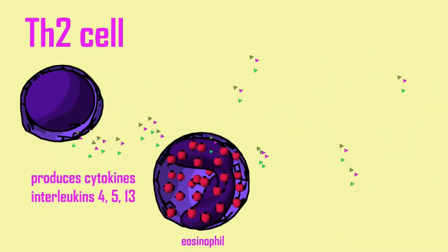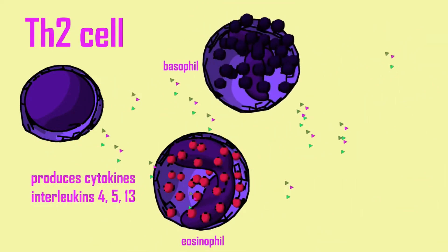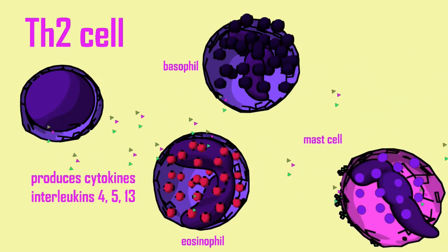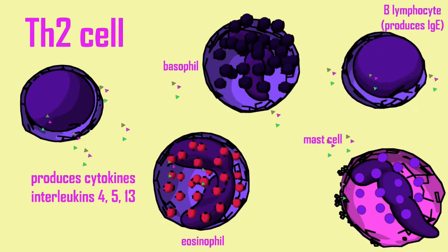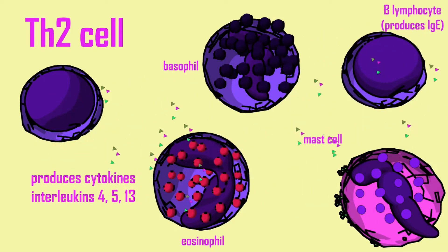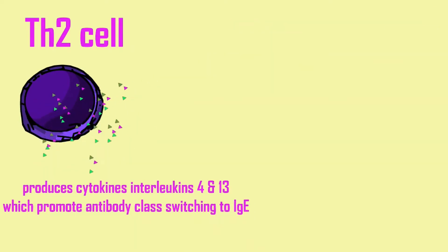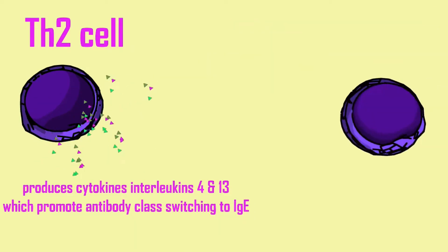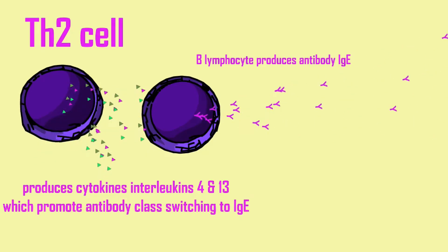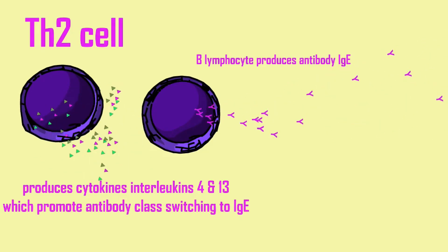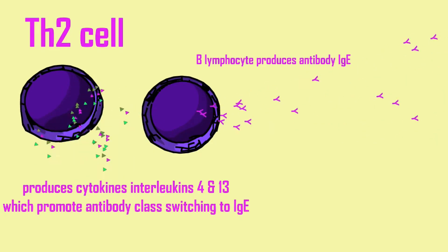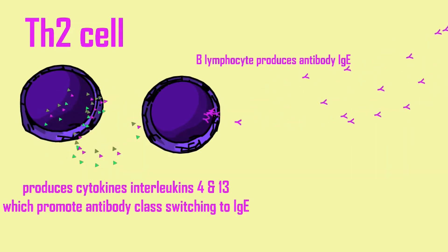Estrogen signaling can affect the cell number of lymphocytes, their activity, and the balance of Th1 and Th2 cells, which helps to regulate our responses to infection versus our predisposition to inflammation and autoimmunity.